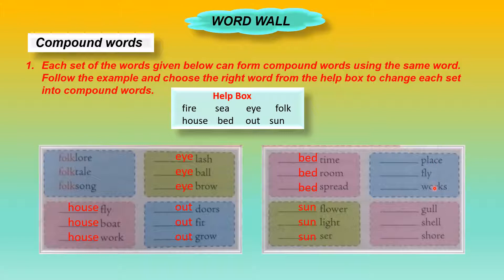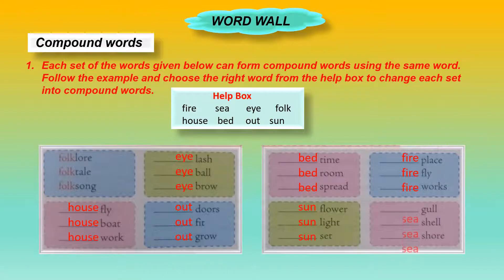Next set of words: place, fly, and works. Looking at the words left in the help box, only 'fire' and 'sea' are remaining. So we use 'fire' — fireplace, firefly, and fireworks. And the last set — girl, shell, and shore. Only 'sea' is left, giving us seagull, seashell, and seashore. This exercise you can do in your book very neatly.